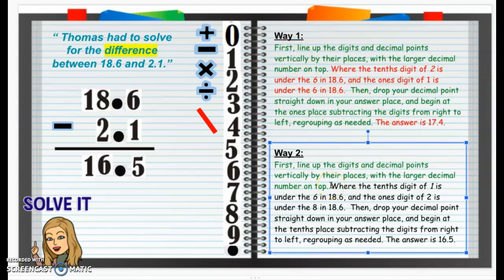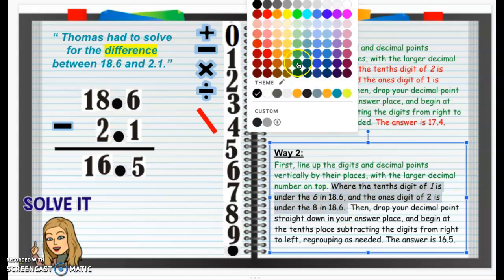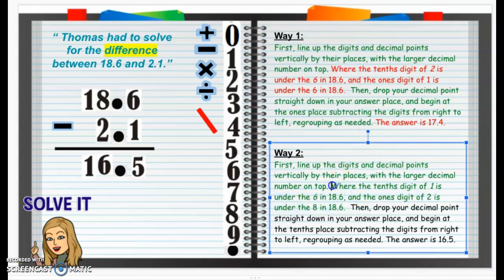Let's check to make sure Way 2 is correct. The tenths digit of 1 is under that 6 in 18 and 6 tenths — yes. And the 1's digit of 2 is under the 8 in 18 and 6 tenths — yes, it is. So Way 2 has them lined up correctly. I'm going to put that in green.